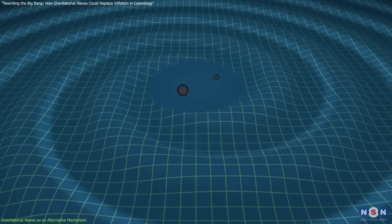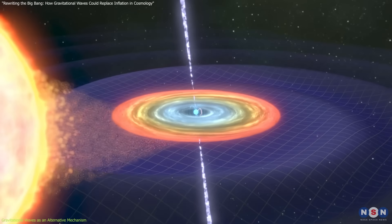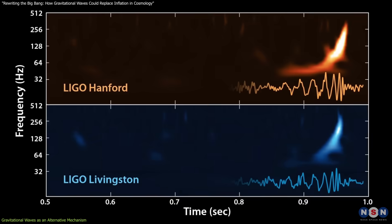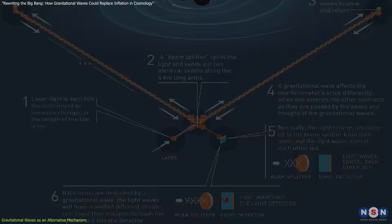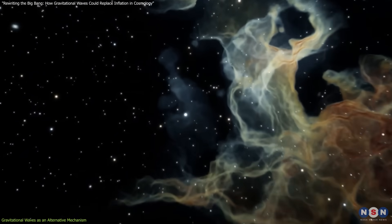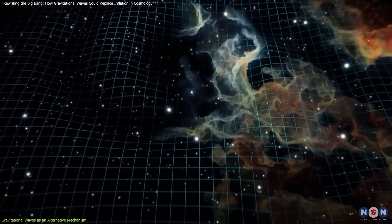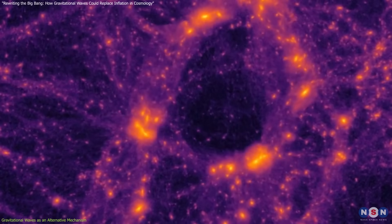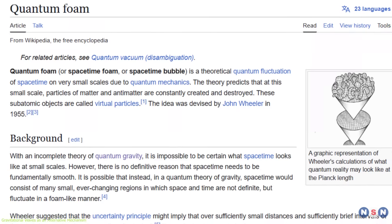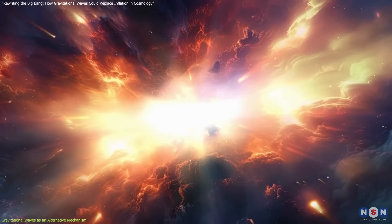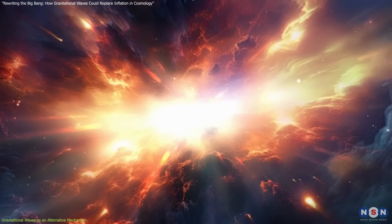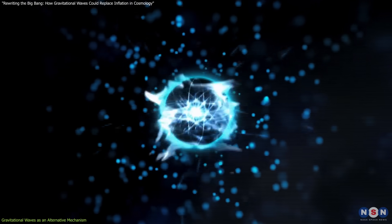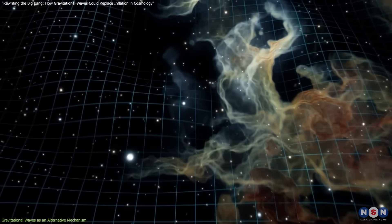Gravitational waves, first predicted by Einstein's general theory of relativity, are ripples in the fabric of spacetime caused by massive cosmic events like colliding black holes or neutron stars. These waves were directly detected for the first time in 2015 by the Laser Interferometer Gravitational Wave Observatory, opening a new era in astrophysics. Recent research suggests that gravitational waves might replace inflation as the mechanism for forming the universe's large-scale structure, based on the concept of quantum foam — a chaotic, high-energy state in the early universe where spacetime itself was unstable and quantum fluctuations generated gravitational waves.